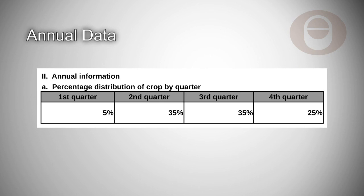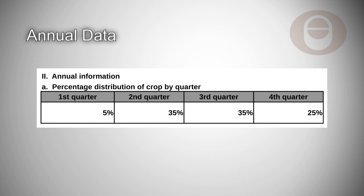Going on to the annual data: an estimate, as a percentage, needs to be provided of the annual crop by quarter, in order to allow more accurate conversion of crop year data into the calendar and/or coffee year. Members that produce more than one type of coffee should indicate the crop percentage distribution for each type separately.